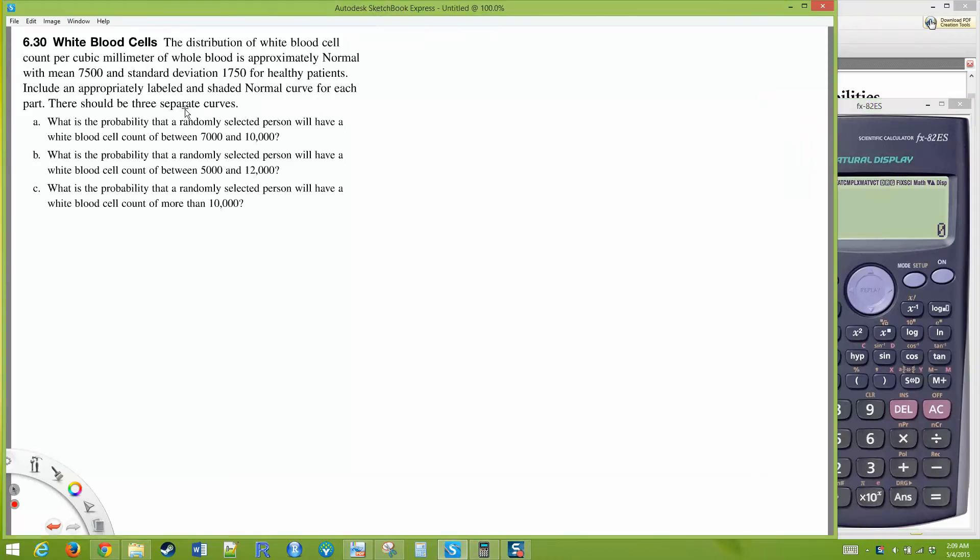Okay, let's work on problem 6.30. Here we have another normal distribution problem where we are asked to find probabilities. The distribution of white blood cell count per cubic millimeter is approximately normal with a mean μ of 7500 and a standard deviation σ of 1750. This is for healthy people.